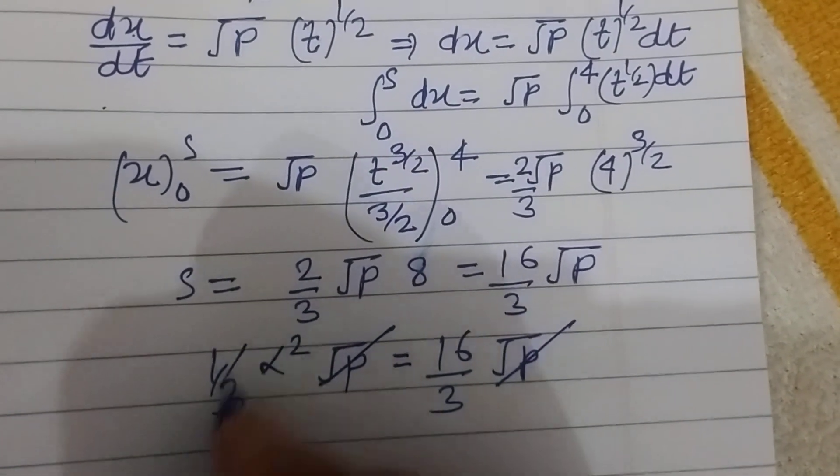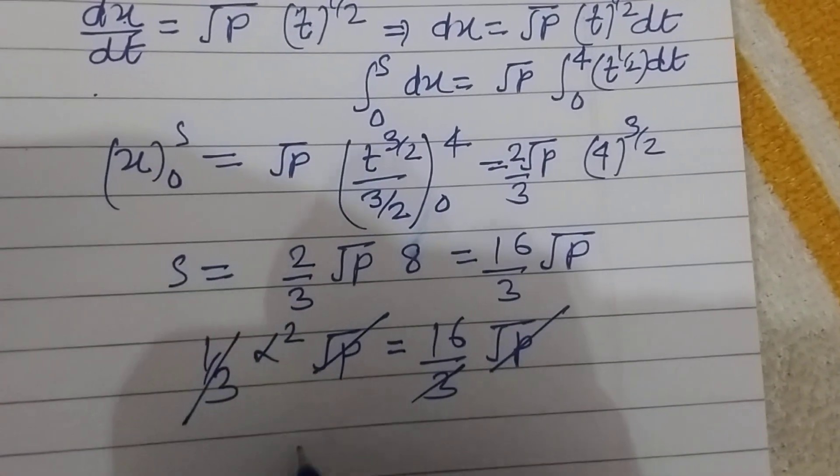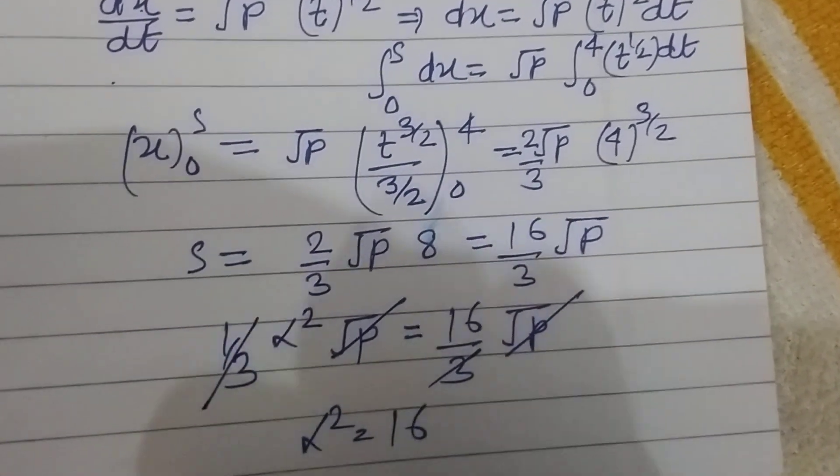So square root P cancels, 1/3 cancels. Alpha squared is 16.